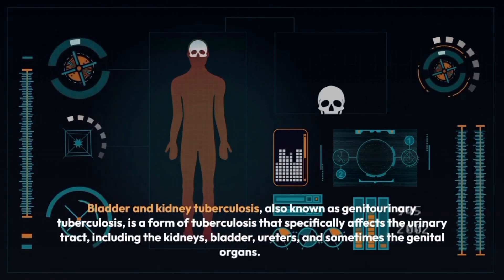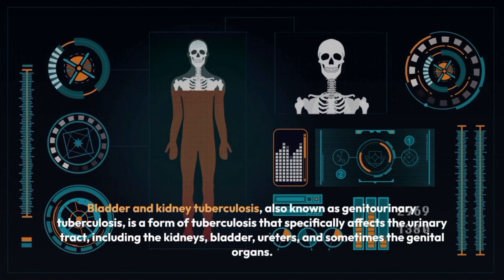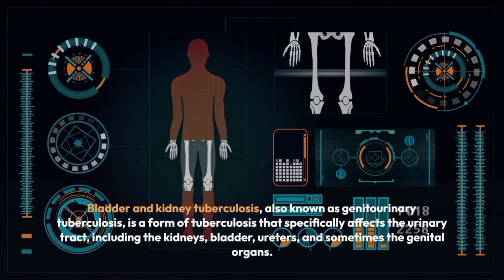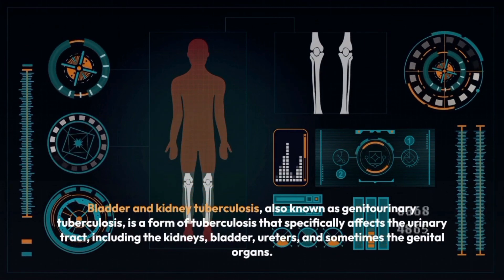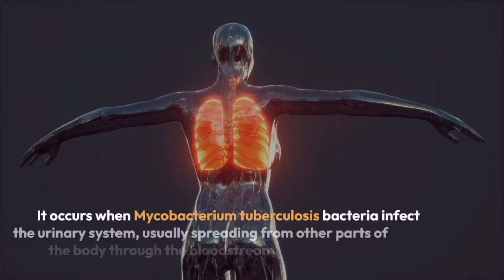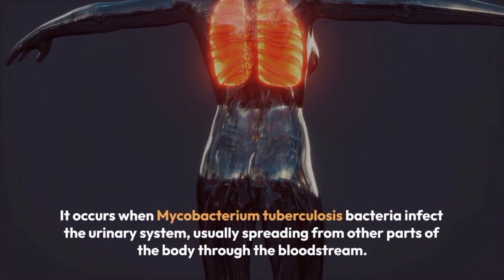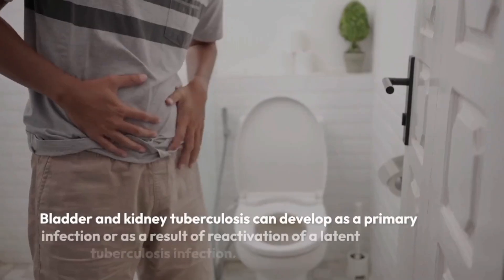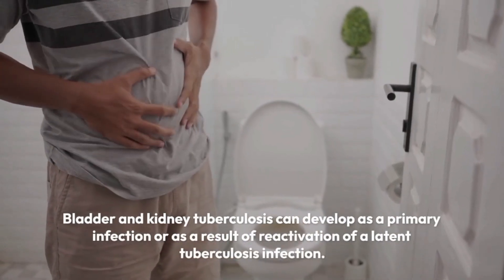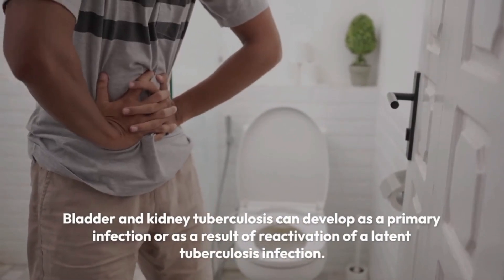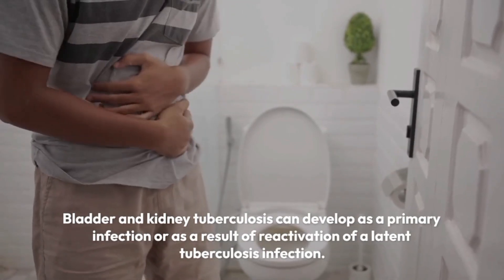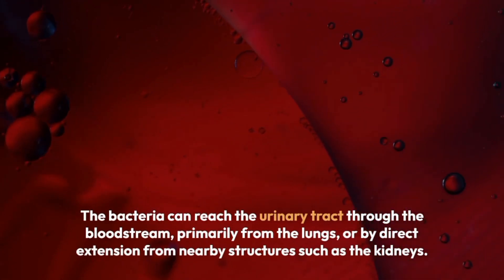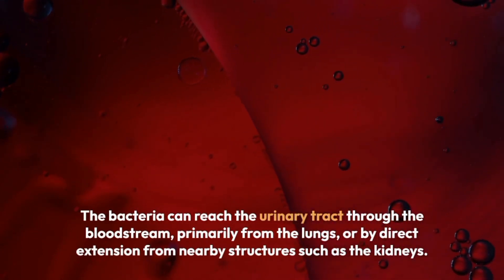Bladder and kidney tuberculosis, also known as genitourinary tuberculosis, is a form of tuberculosis that specifically affects the urinary tract, including the kidneys, bladder, ureters, and sometimes the genital organs. It occurs when Mycobacterium tuberculosis bacteria infect the urinary system, usually spreading from other parts of the body through the bloodstream. It can develop as a primary infection or as a result of reactivation of a latent tuberculosis infection, with bacteria reaching the urinary tract primarily from the lungs.